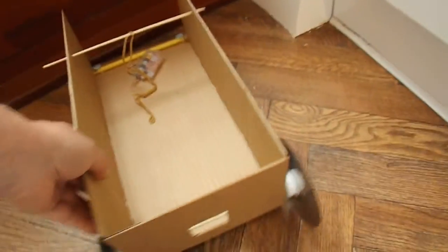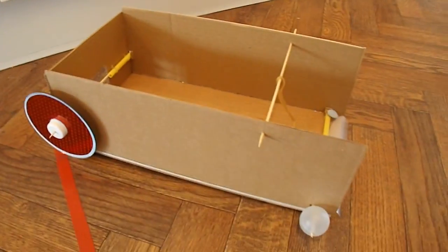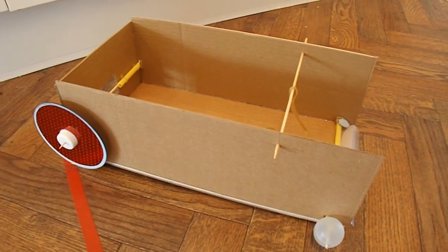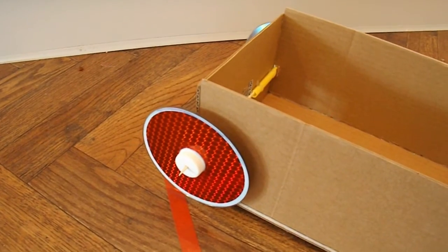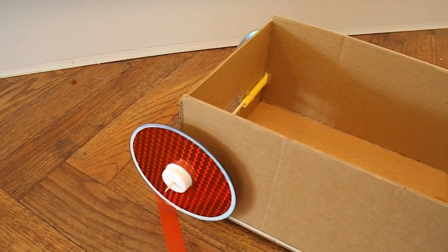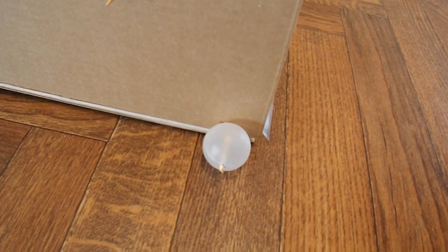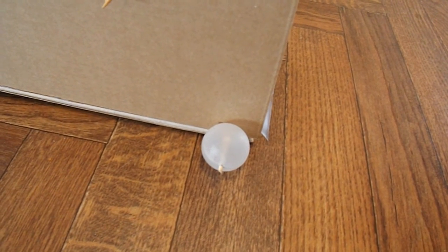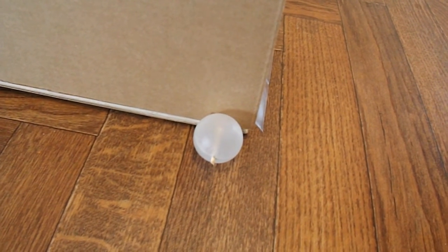Basically we've got a simple cardboard box. I've got CDs for wheels at the back with a barbecue skewer for the axle. I've got plastic roll-on deodorant balls for the front wheels just so I can get it very close to the ground.